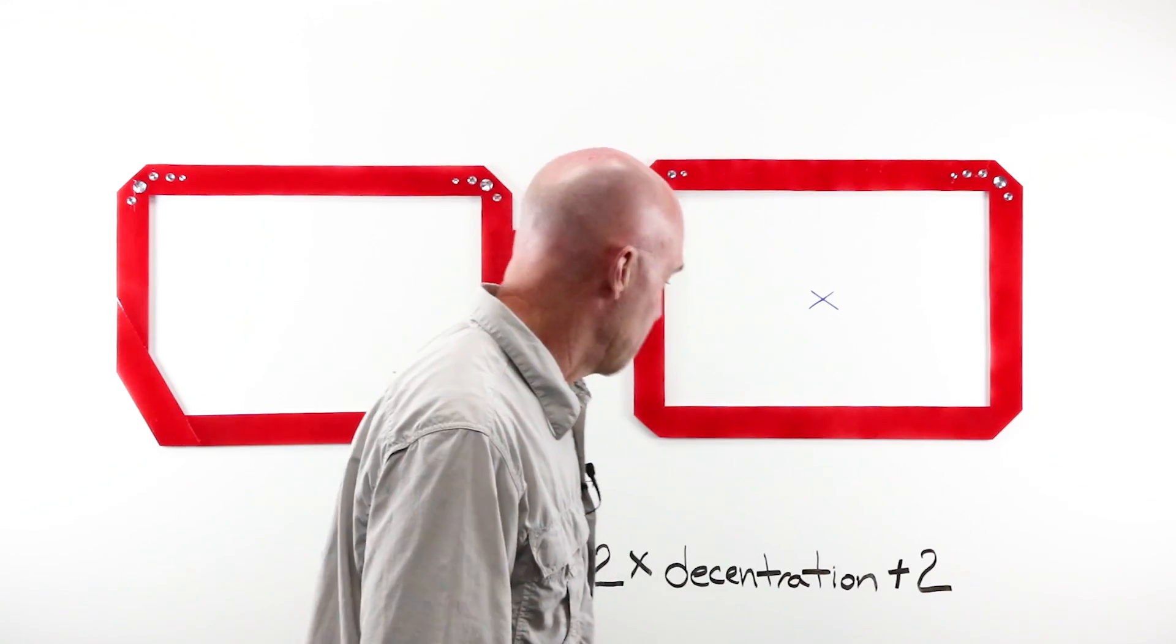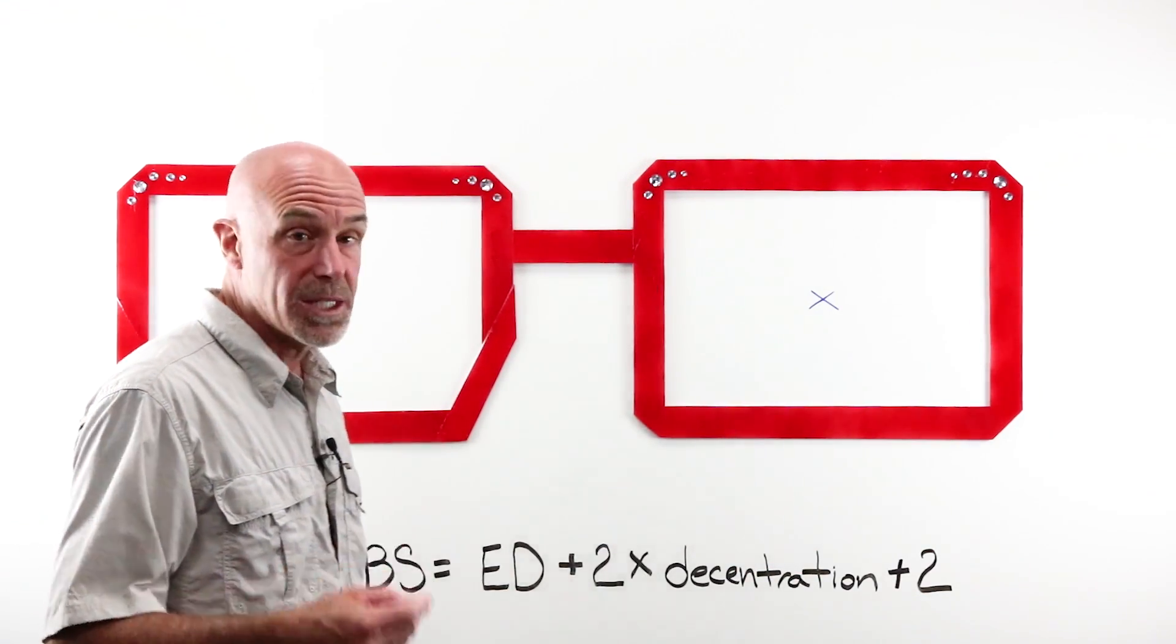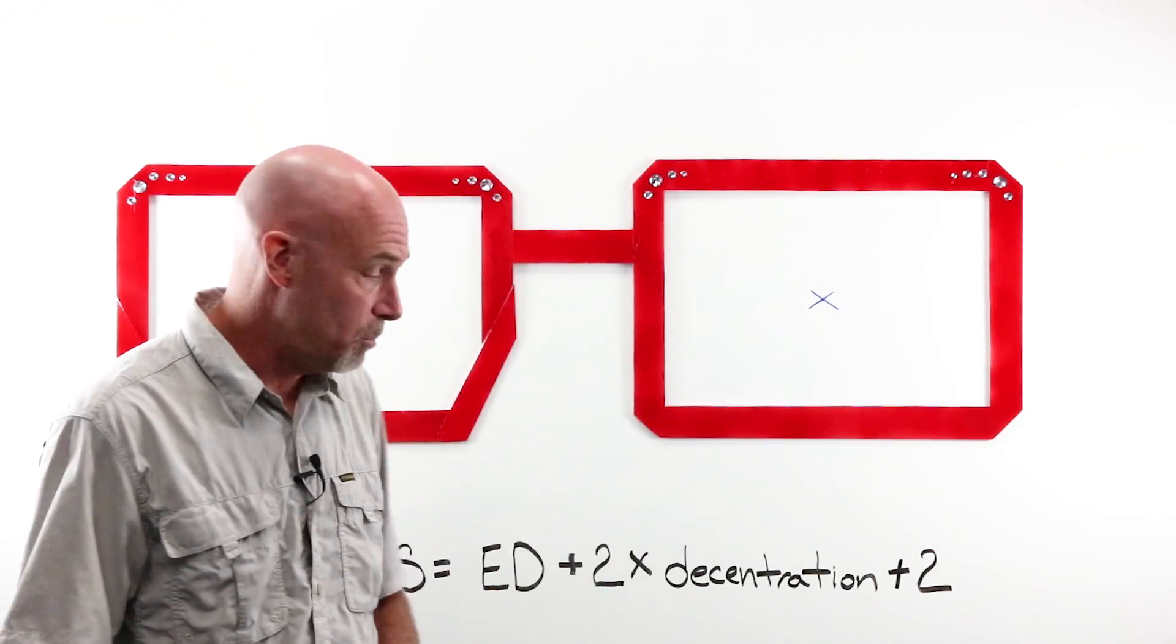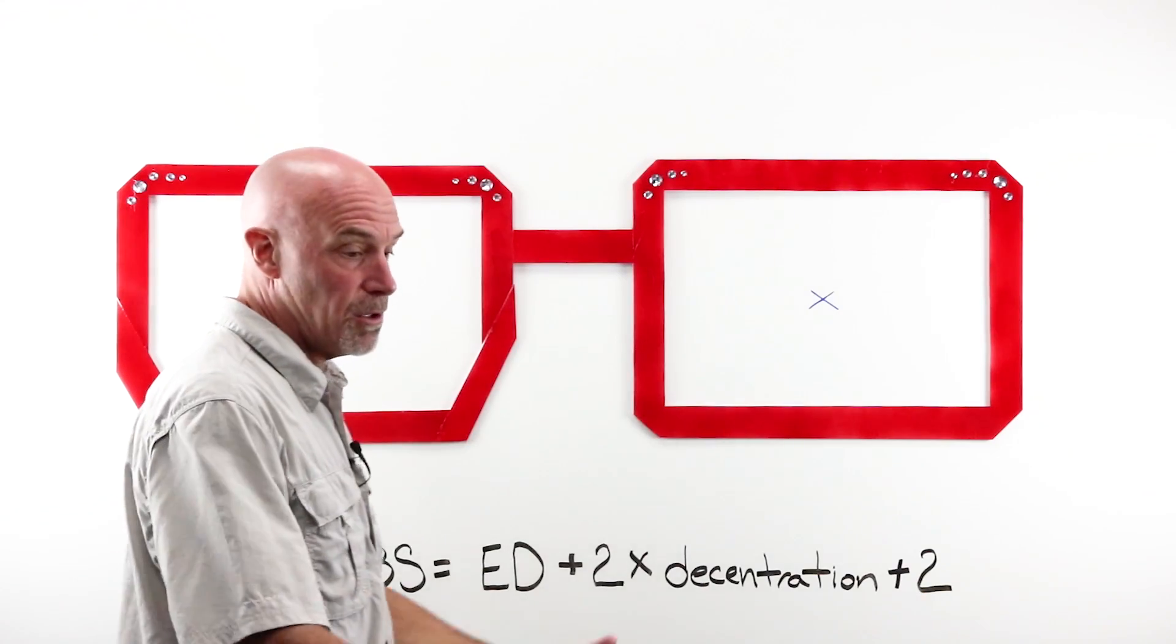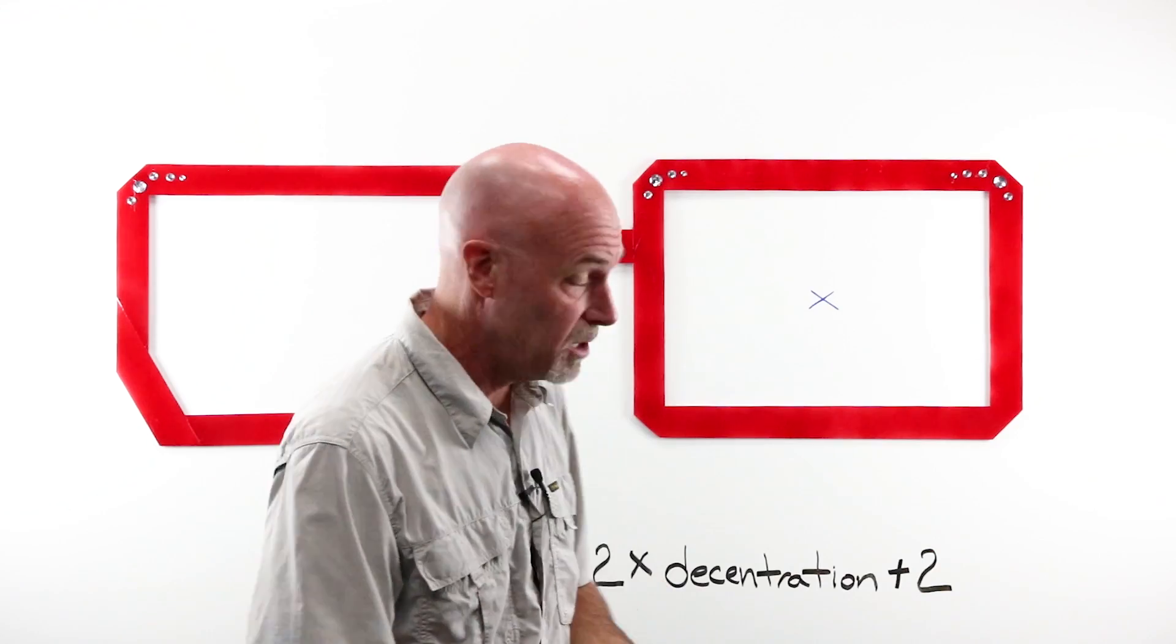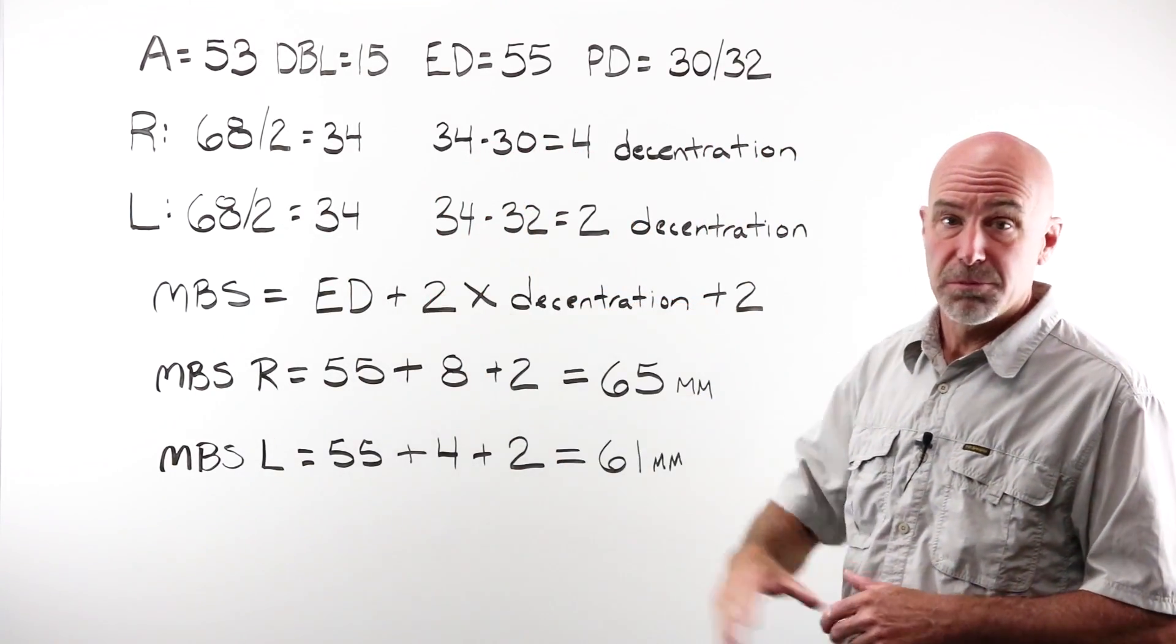Now, let's just do a couple examples of working this through, and you'll remember where ED comes from, it is two times the longest radius that you can find within the eye wire opening. I'm not gonna demonstrate that here, that's on the OpticianWorks website, and on the video called The Boxing System.